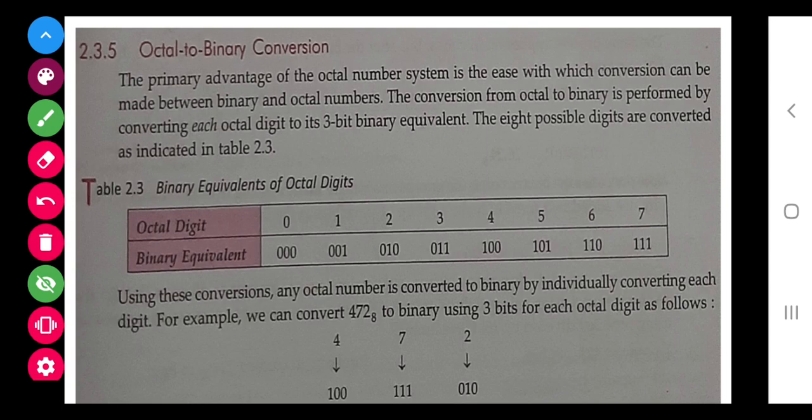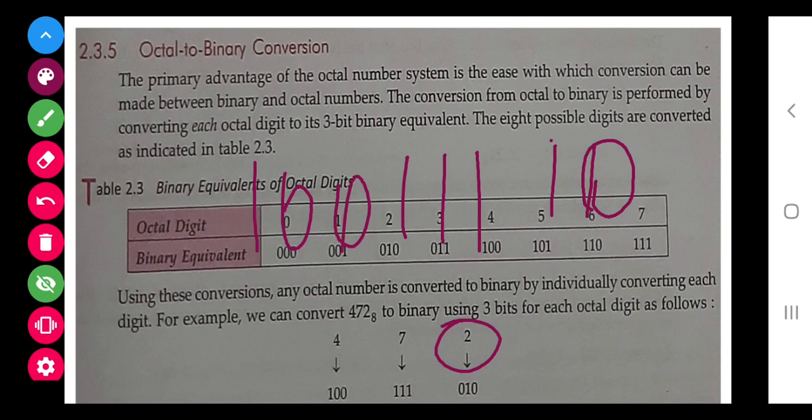Again I am repeating with this example: binary conversion of 2 is 10, binary conversion of 7 is 111, and binary conversion of 4 is 100, but this is only two digits, so we will add one more digit to it. And finally, the answer is 100111010.